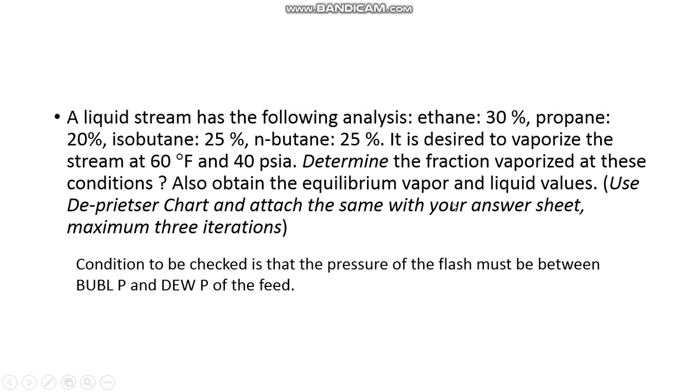flash will only take place or will only get converted into two phases, vapor and liquid, if the given pressure, in this case 40 psi, is in between bubble point pressure and dew point pressure corresponding to this system. Now how do we find bubble point and dew point for this system? It is said that there is a liquid stream, so it becomes X1, X2, X3, X4. Temperature is given. You can go ahead and use your De-Priester chart to find the bubble point pressure, that is bubble P. So that will give you one value, that is bubble P.